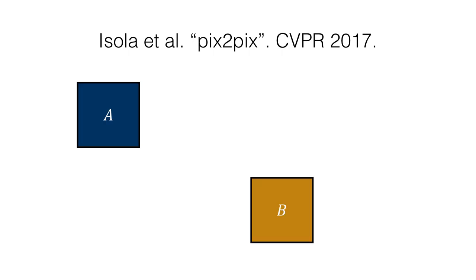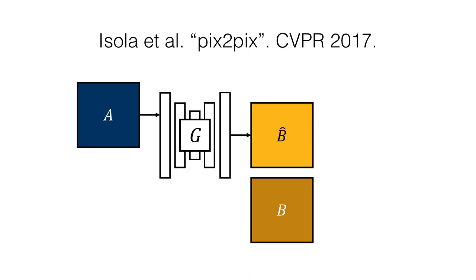Given training pairs, Pix2Pix trains a generator G using an L1 loss to encourage accuracy and a learned discriminator to encourage realism. Pix2Pix is able to produce impressive results over a wide array of problems,